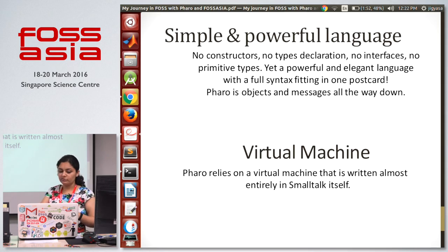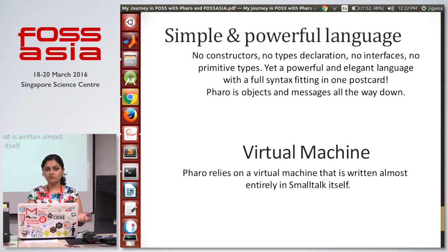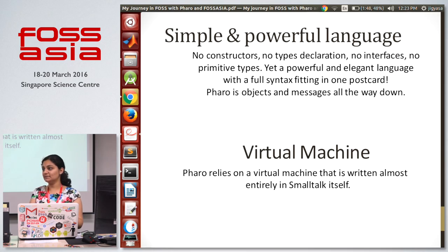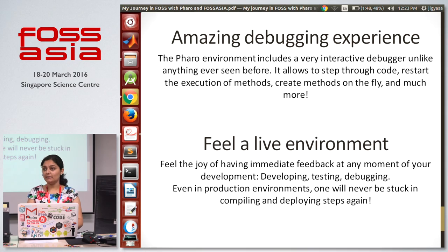These are a few features of Pharo: it's simple and powerful, a pure object-oriented language where it's just objects and messages interacting with each other. There are no constructors, no type declarations, no interfaces, no primitive types — the syntax is very short. The virtual machine itself is written in Smalltalk.